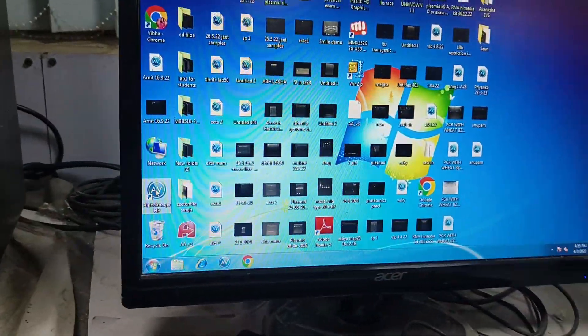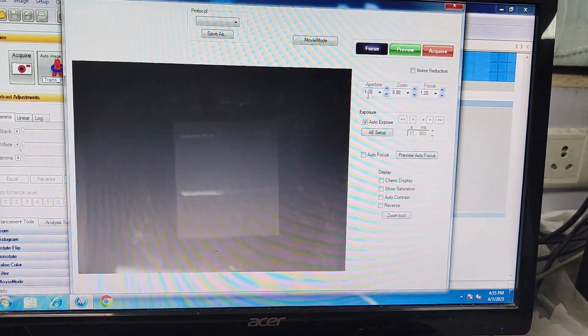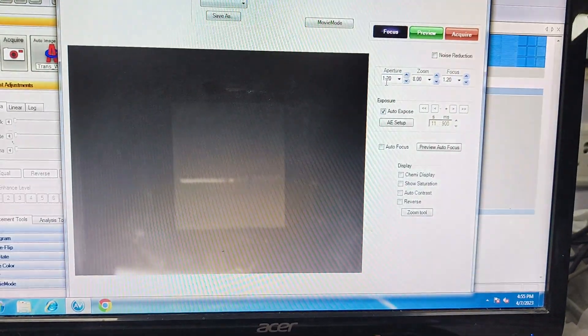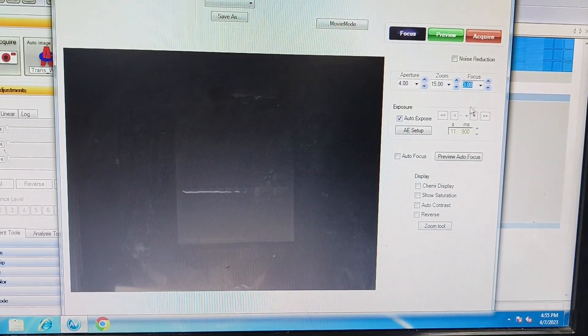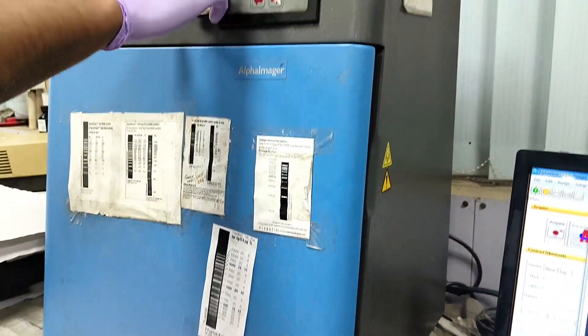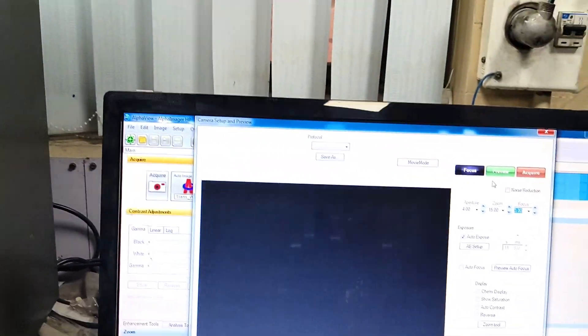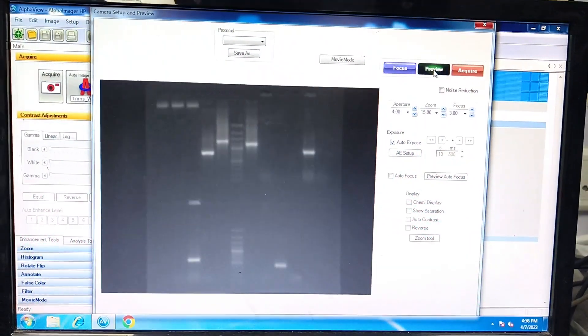Open the software provided with your system. Here we are using AlphaView software. Then adjust any setting as per your requirement. Close the door of the gel dock and switch on the UV light. Here you go. Now we can see a beautiful gel image showing DNA bands of different sizes along with a ladder.